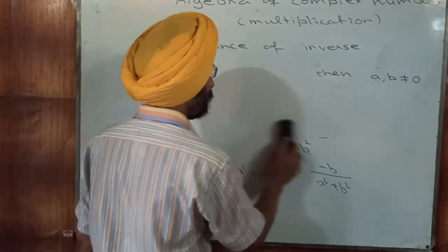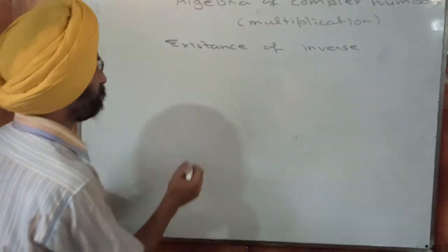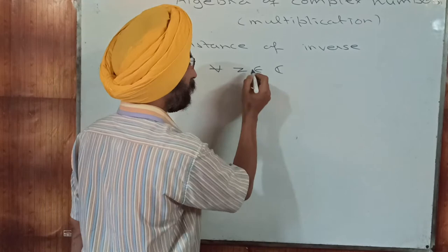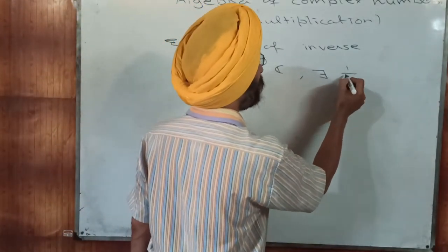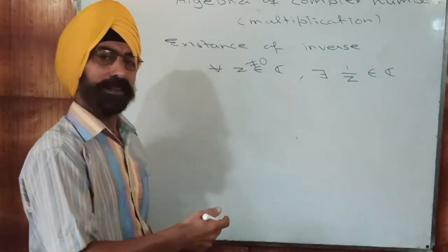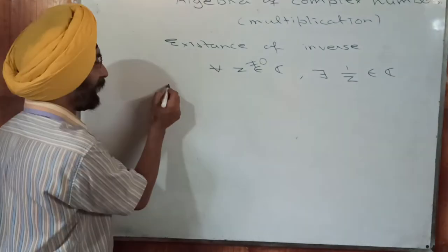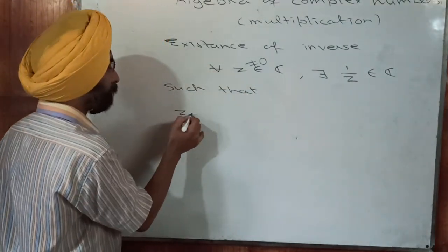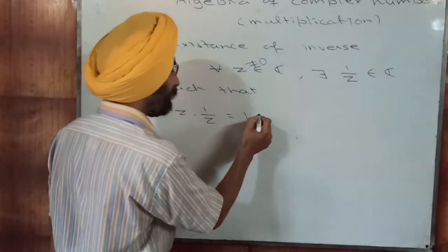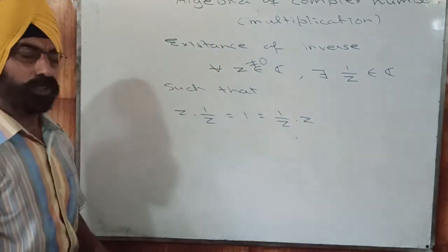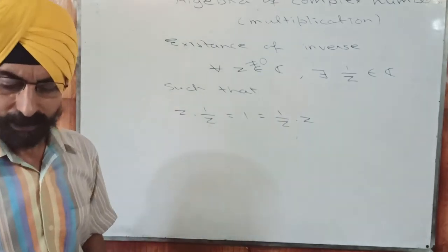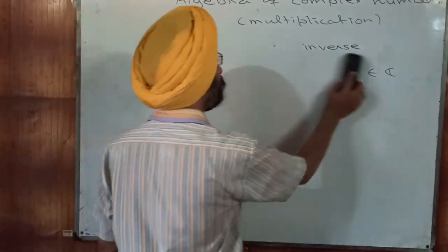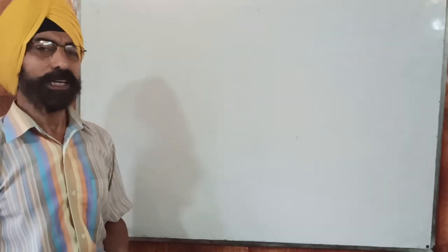So for every non-zero complex number Z, there exists a complex number 1 upon Z — which is also a complex number — such that Z multiplied by 1 upon Z equals the multiplicative identity 1, and 1 upon Z multiplied by Z also equals 1. So the multiplicative inverse of Z is its reciprocal 1 upon Z.